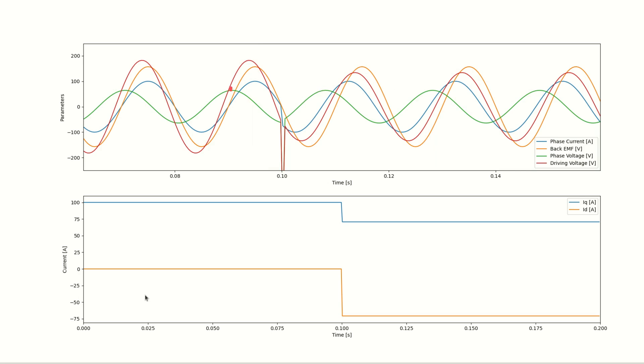Notice that the phase difference between the phase voltage and the phase current hasn't changed. That phase difference is a function of the speed and the motor parameters, specifically its resistance and inductance, and we can't change those.